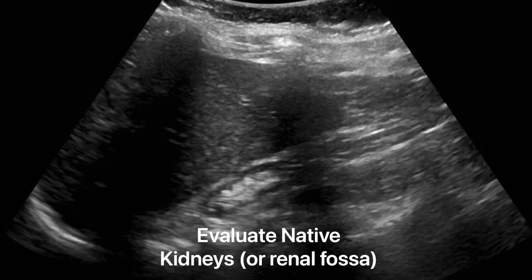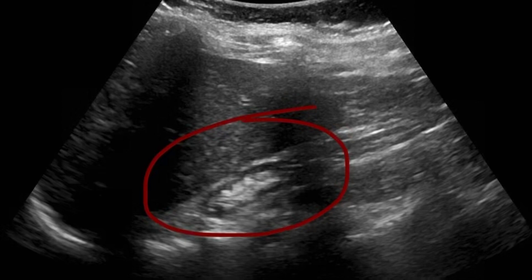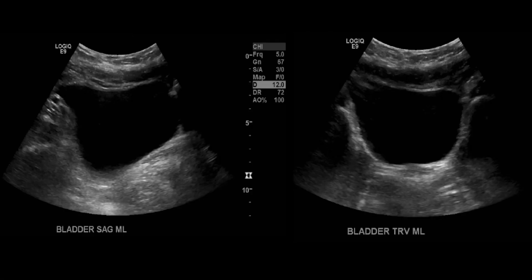I like to begin evaluating the patient's native kidneys, if they have any. Typically, if they do have native kidneys, they're going to be scarred and small, sometimes so small that they're imperceptible. Here, you can see this patient has a very small kidney. If the native kidneys are not perceptible, too small, or have been surgically removed, you can just take a picture of the right upper quadrant renal fossa and the left renal fossa. Then I go on to take pictures of the patient's urinary bladder in sagittal and transverse.